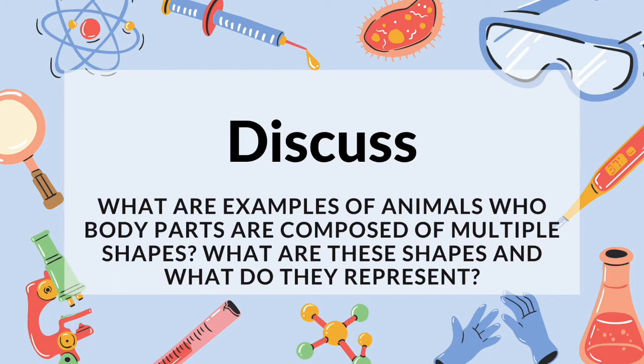As we saw in the activity, shapes are also widely used in art. What are examples of animals whose body parts are composed of multiple shapes? One example is a fish. Fish have eyes that are in the shape of circles, but their bodies are ovals. In addition, they typically have triangularly shaped fins that help them swim.